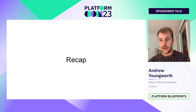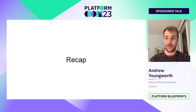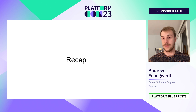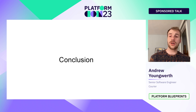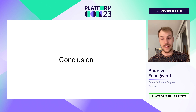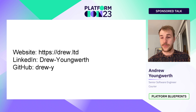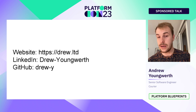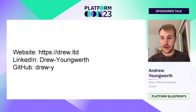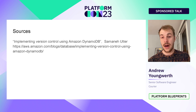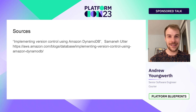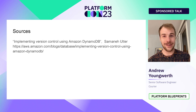To recap: we gave an introduction to what versioning is, established a baseline, went over what it's like to version simple data, and gave an example of how to version more complex graph-based data. Hopefully this served as a good introduction to version control with DynamoDB and versioning a graph in DynamoDB, and gave some ideas for your own product or service. You can find me at my website https://drew.ltd, on LinkedIn at drew-youngworth, and on GitHub at drew-y. Thanks everyone.